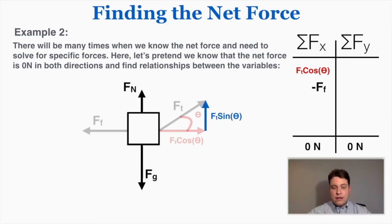In the y-direction I can see I have two forces pointing up, one pointing down, so this is how I'm going to record those. Now I get from my table, because I know in this specific case that the total net force in both directions is equal to zero, I can solve for new relationships between the variables.